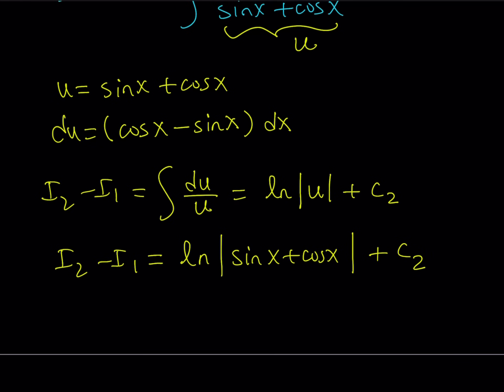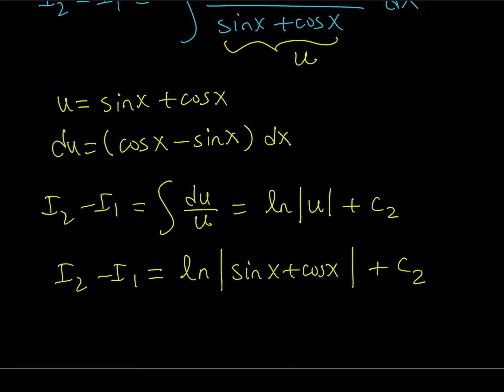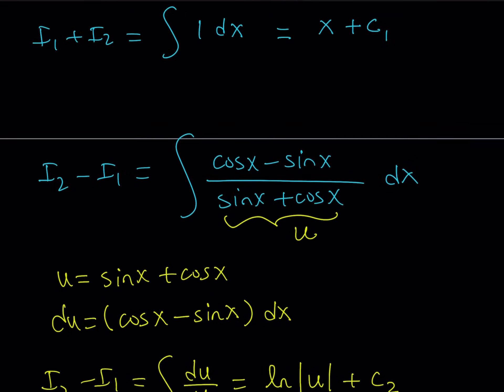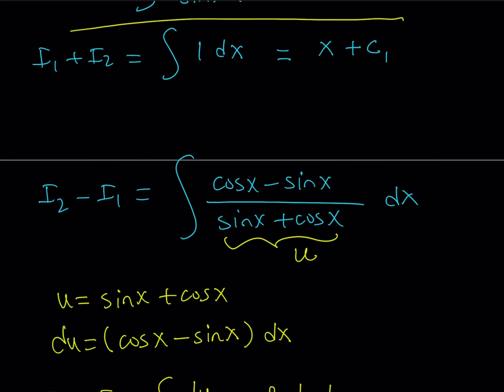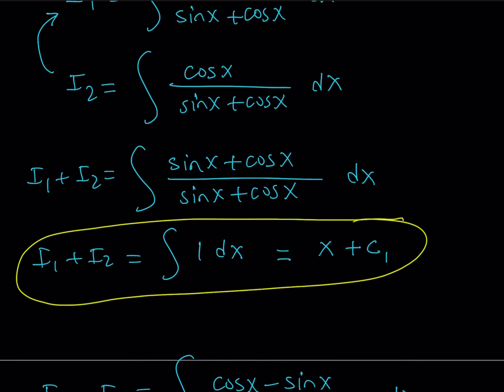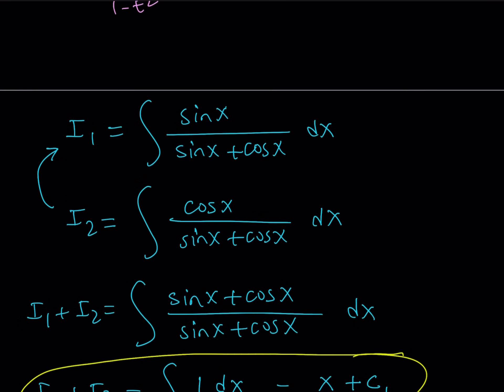Now I got i2 minus i1 and I have i1 plus i2. So i1 plus i2, I found it to be from here x plus c1. So what am I going to do with these two equations? My goal is to evaluate i1. Remember, that's our original integral. i2 is something that we invented. We wanted to use it so that they could go well together. So I need to solve for i1.